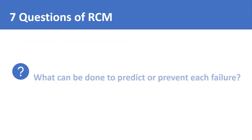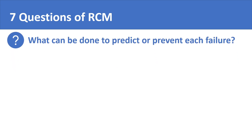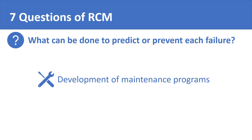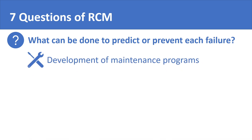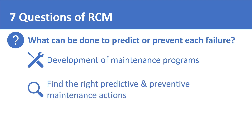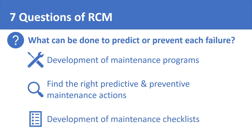The sixth question of RCM asks: what can be done to predict or prevent each failure? This question constitutes the sixth step of the RCM process. It is about developing predictive and preventive maintenance programs. By this stage, you have already worked out all the different types of failures, failure modes, their effects and their consequences. So now is the time to critically analyze the equipment in your plant to find the preventive and predictive maintenance actions needed. The sixth step is where maintenance checklists and schedules are developed.